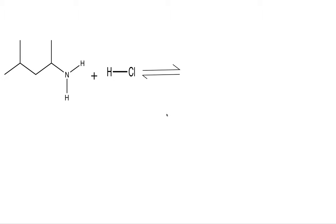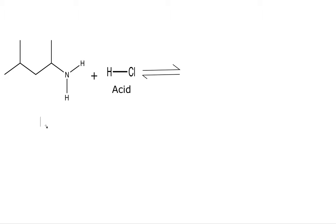Welcome to the third part of our series on acid-base equilibrium. In these problems I will show you which side of the acid-base equilibrium problem is favored. First, we need to decide what is our base and what is our acid. HCl is hydrochloric acid, and by its name we know it is an acid. So if this is our acid, this is our base.